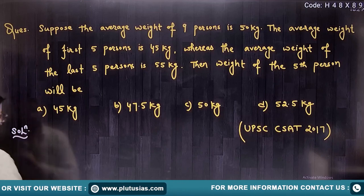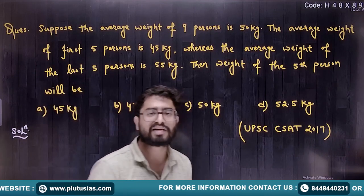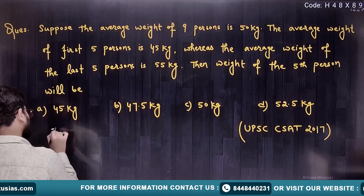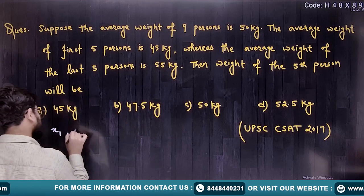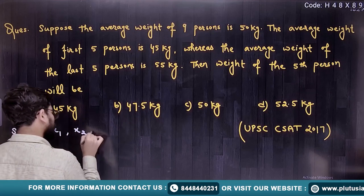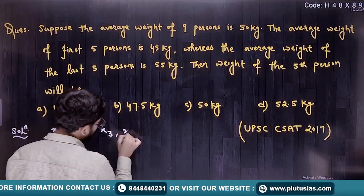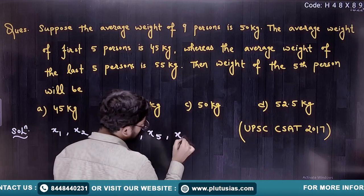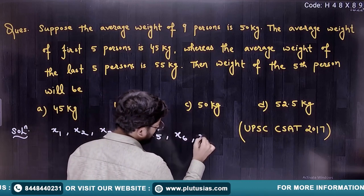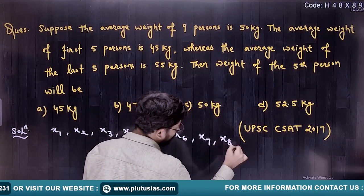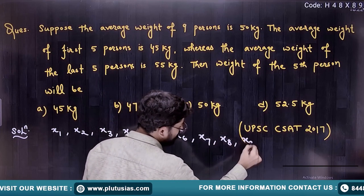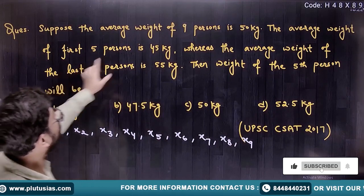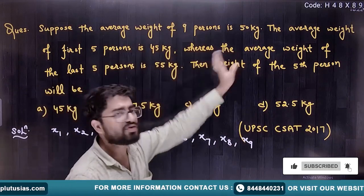First of all, let's say you have 9 persons as X1, X2, X3 till X9 — first person, second person, third, fourth, fifth, sixth, seventh, eighth and ninth. Their average weight is 50 kg.